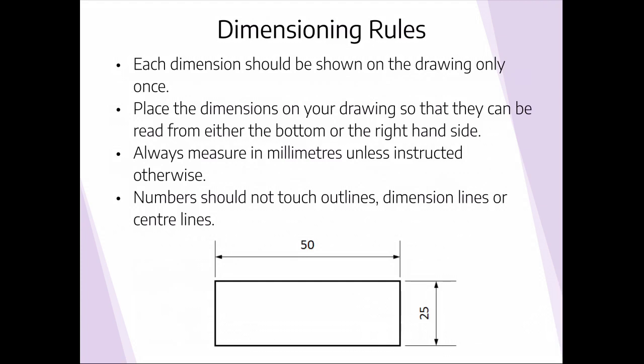We always try and place our dimensions on our drawing so we can read them from the bottom of the page, so looking at it landscape, or from the right hand side of the page if we were to turn it round through 90 degrees. What this means is our numbers sit in a consistent position. We normally look at a drawing sheet in A3 landscape view. This means looking at the 50 millimetres, it sits on top of the line.